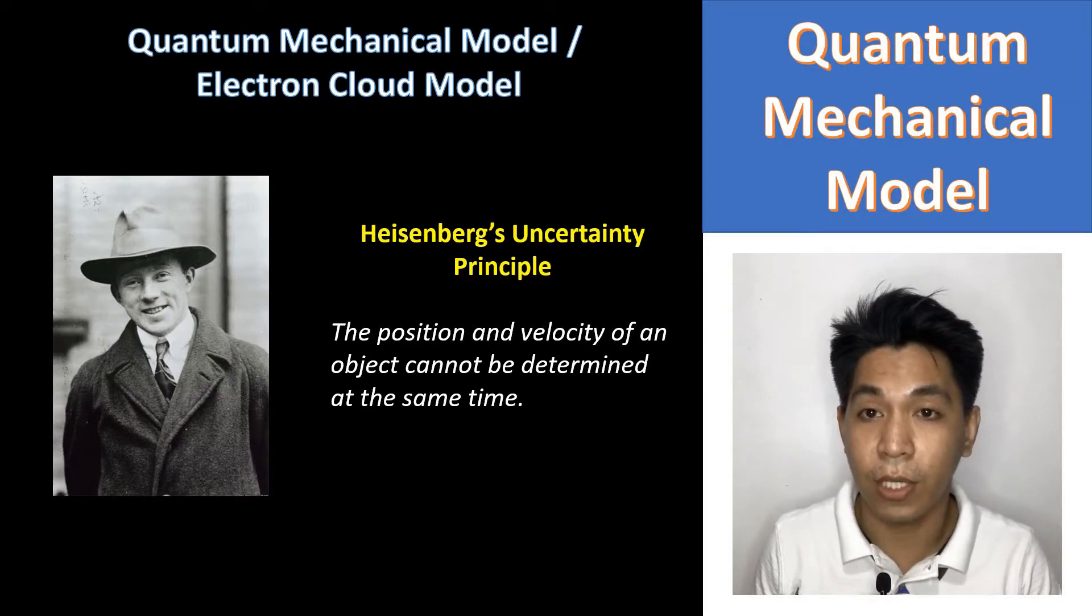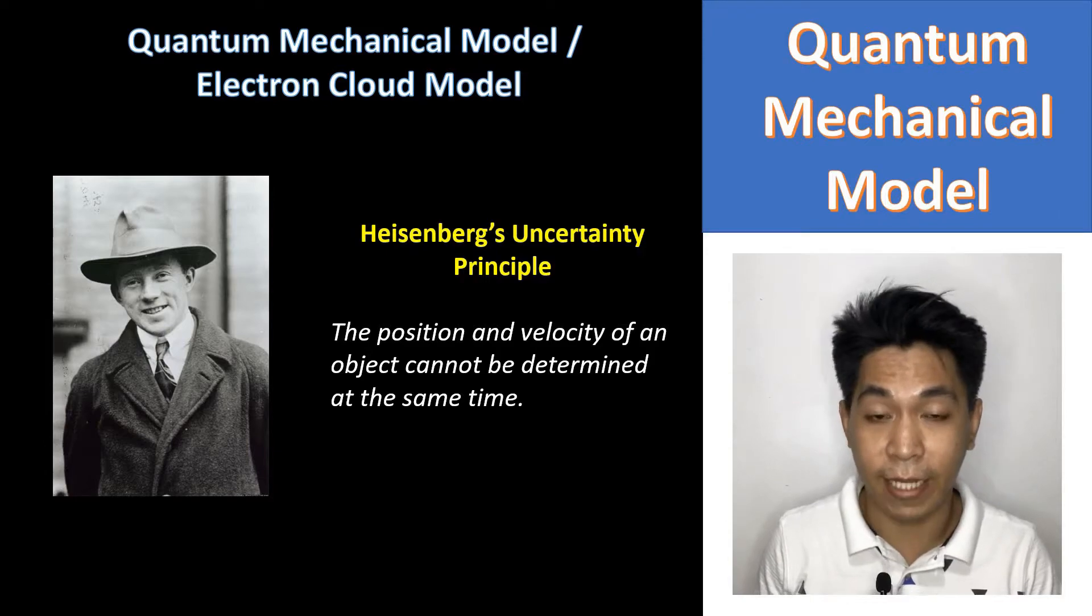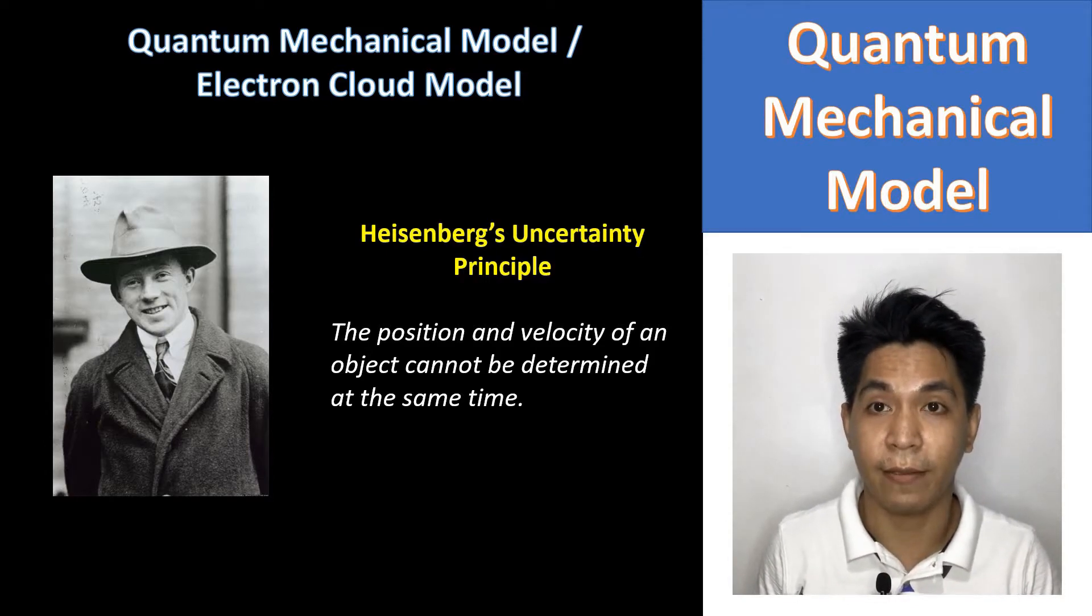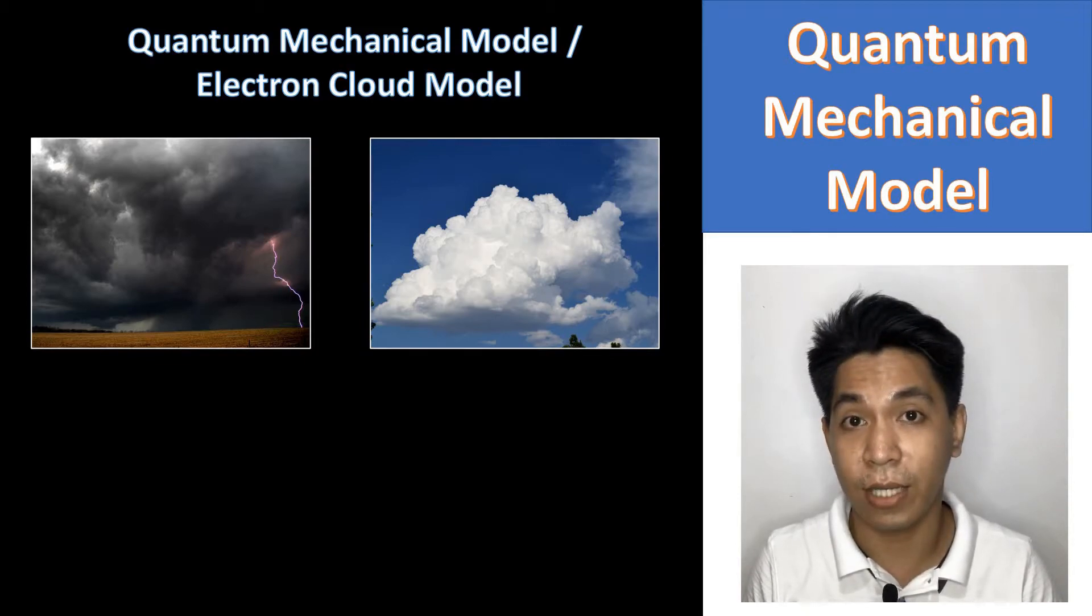What we can do is to identify the area where we can possibly find them. Think of it this way. Between the two clouds, which one do you think carries more rain? Generally speaking, the darker the cloud, the more rain it contains.